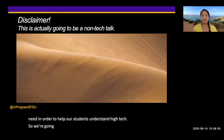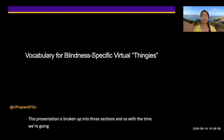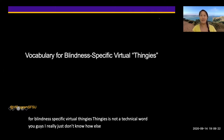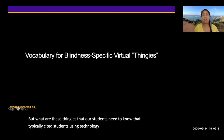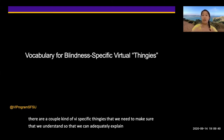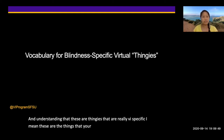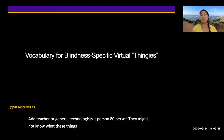We're going to get a little interactive later. This presentation is broken up into three sections. The first section covers the vocabulary for blindness-specific virtual thingies — things that our students need to know that typically sighted students using technology really don't need to know. These are VI-specific things that your general ed teacher, IT person, or AT person might not know unless they're really familiar with blindness technology.